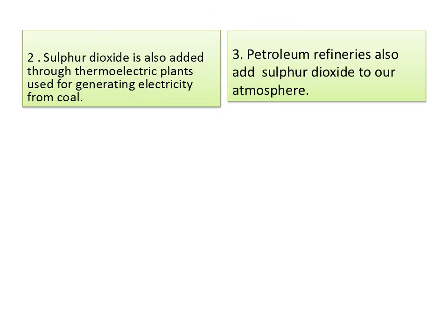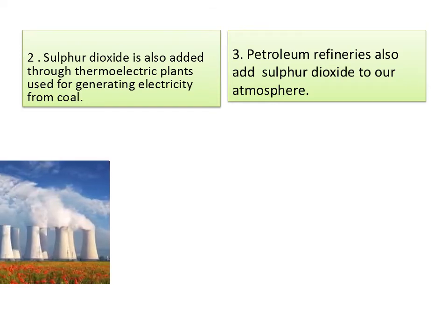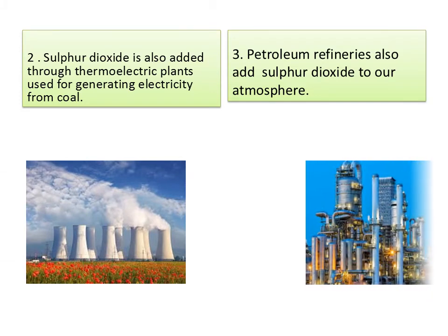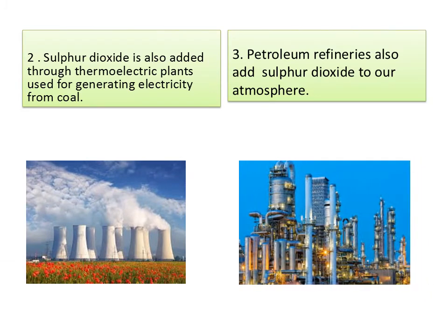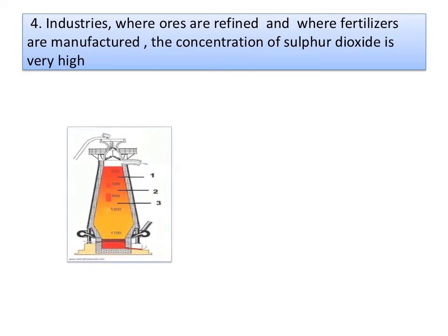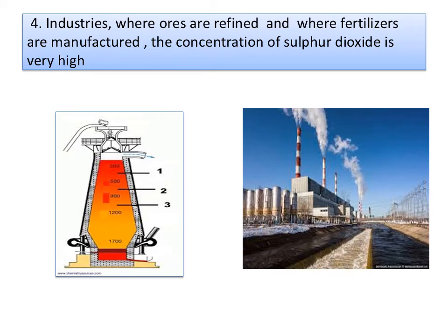Sulphur dioxide also reaches the atmosphere through thermoelectric plants used for generating electricity from coal. Even petroleum refineries add sulphur dioxide to our atmosphere. Industries where ores are refined and where fertilizers are manufactured also have very high concentrations of sulphur dioxide gas.